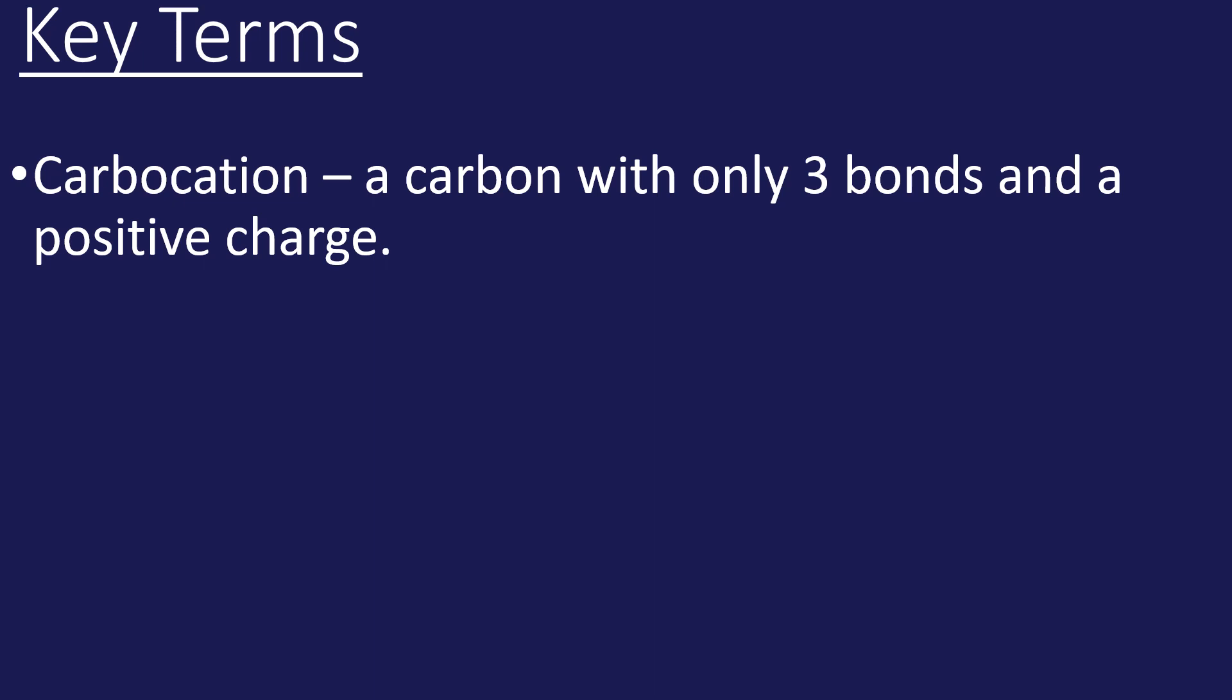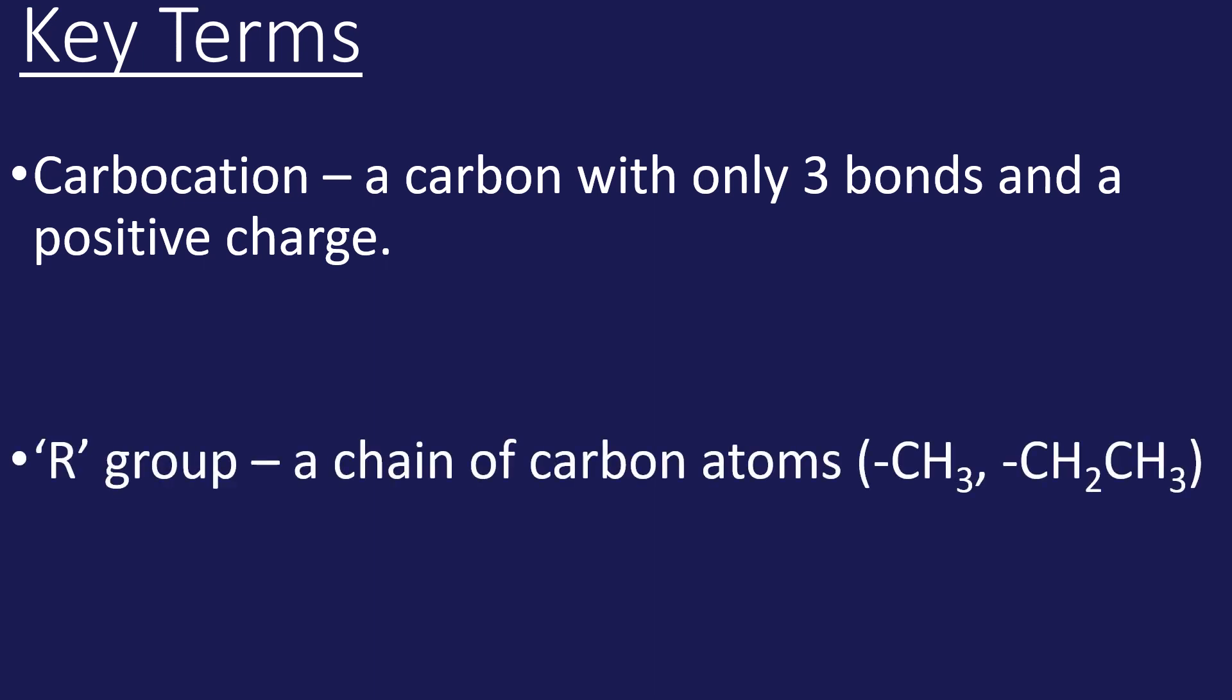An R group is a chain of carbon atoms. It could be something as simple as a CH3 group, a methyl group, it could be an ethyl group, it could be much longer. If it's an R group it just means it's bonded to a carbon group.